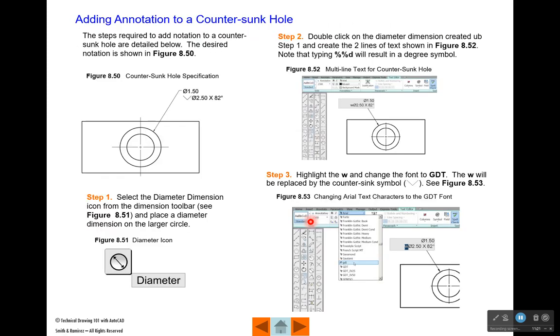The same holds true for when we annotate the countersunk hole. We just use the diameter symbol and put a diameter to the larger diameter that we've got here on our front view. Then we're going to double click on the text and edit the text to add a second line of text with a lowercase w, a diameter, a capital X, and 82 degrees. Then we're going to highlight the w and change it from Arial to GDT font.